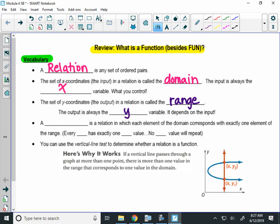Now, a function is a relation where every element of the domain corresponds with exactly one element of the range. That's a complicated sentence. The simplified version says every x value has exactly one y value that matches to it. No x value will repeat. That's the way we like to think about it.